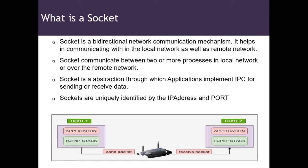We have two hosts here — host one and host two — connected through a router, maybe on a LAN network. When host one sends data to host two, it has to pass through the TCP/IP stack that is implemented on the kernel side, while our application is on the user side. When the packet is received by host two, which also has a TCP/IP stack implementation on the kernel side, it removes all the headers from the ethernet frame received from host one, and then the application gets the data. This is the socket communication between two hosts.